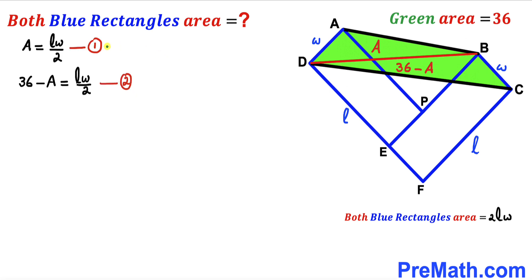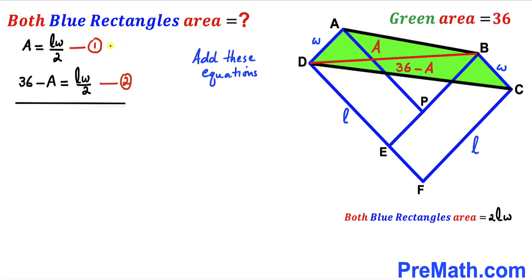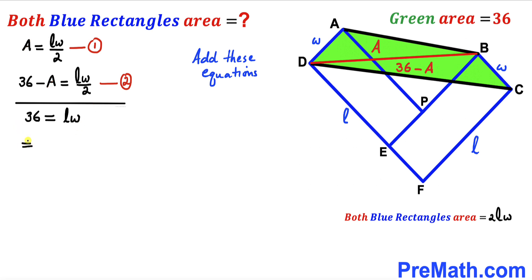We now have equation 1 and equation 2. Adding both equations together, the A and negative A cancel out. On the left-hand side we get 36, and on the right-hand side we get LW/2 plus LW/2, which simplifies to simply L times W. Therefore, LW equals 36.